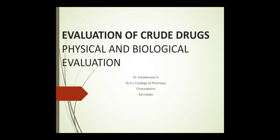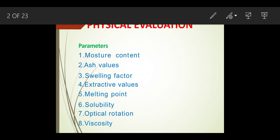Evaluation of crude drugs: we are going to discuss physical and biological evaluation. Physical evaluation is important mainly for the quality of the crude drug and also for detection of adulterants. The parameters involved in physical evaluation include moisture content, ash values, swelling factor, extractive values, melting point, solubility, optical rotation, and viscosity.